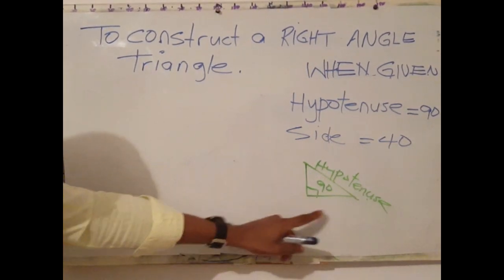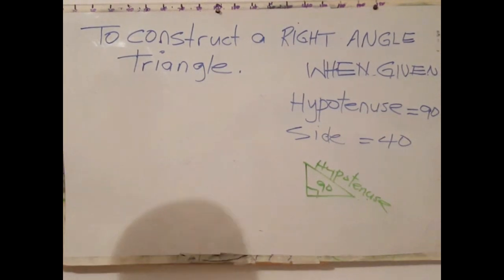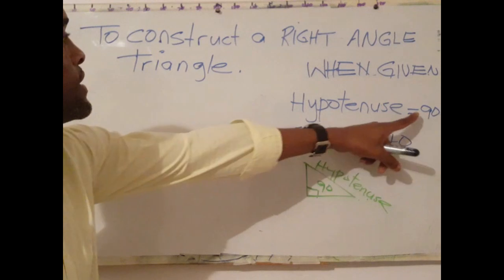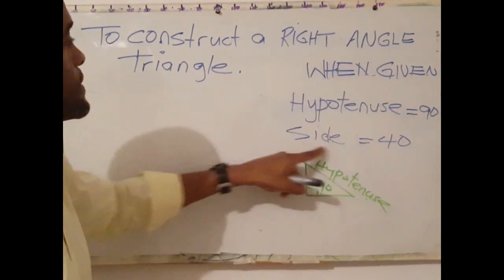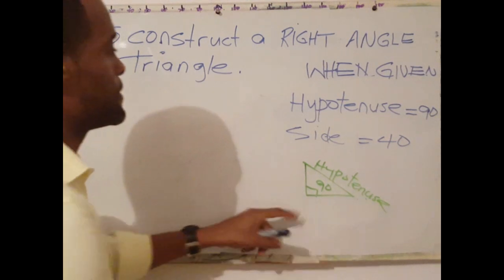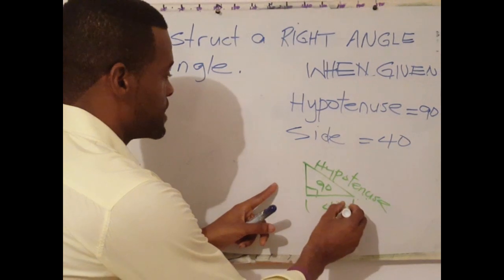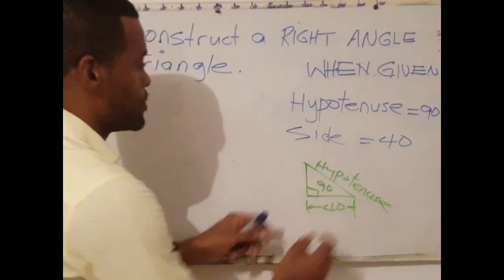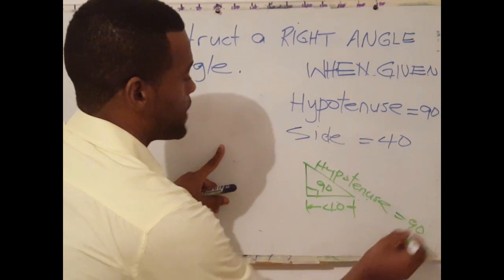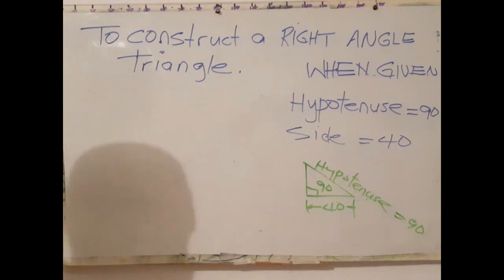This is a graphic representation of the triangle. In this case the hypotenuse is 90 millimeters. The side, which can be either this side or that side, is 40 millimeters. So we have the length of this side which is 90 and a base of 40 millimeters.